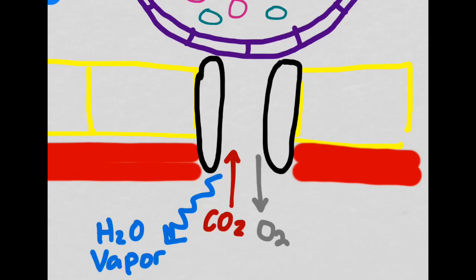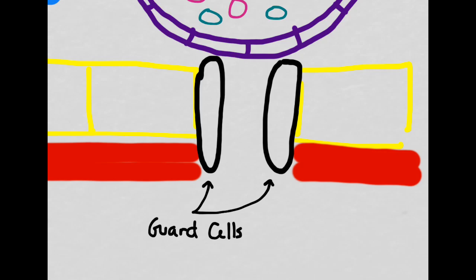This opening allows for carbon dioxide gas to flow in, oxygen gas to flow out, and water vapor to also flow out. However, if we left it open all the time, the leaf would rapidly dry out. These two structures, making up either side of the stomate, are called guard cells. The guard cells can pinch together in order to open or close the stomate as necessary.